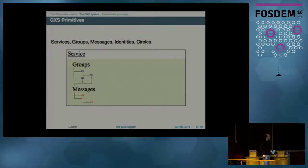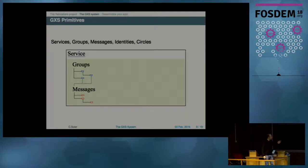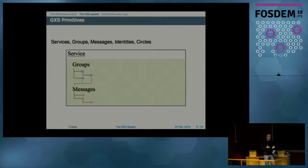GXS works with five main concepts: services, groups, messages, identities, and cycles. A service is, for instance, a forum. A service distributes two types of hierarchical objects: groups and messages.